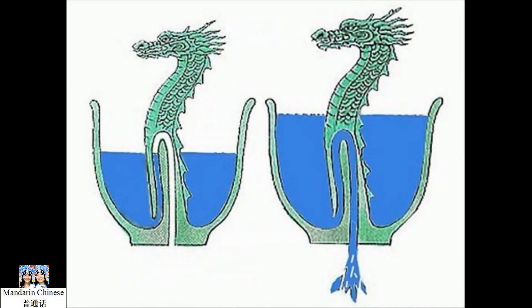If liquid inside a Gong Dao Bei surpasses a certain point, it will leak from the bottom of the cup.